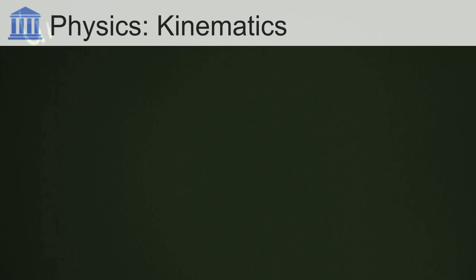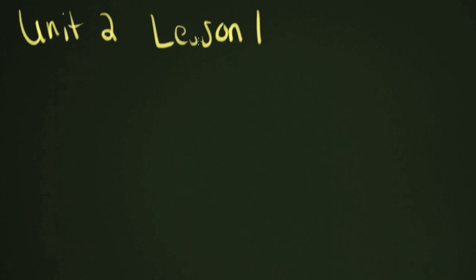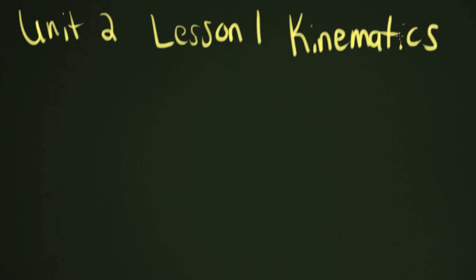Welcome to Unit 2 in Physics. Unit 2 deals with linear motion, and our first lesson in Unit 2 is going to be called kinematics. Kinematics describes the motion of objects or groups of objects, and in this we are going to look at several terms and see how they all relate, what they look like, and how to use them in equations to solve real-world problems.